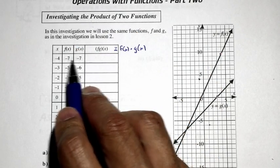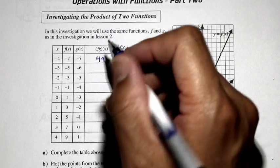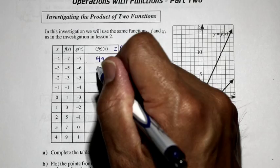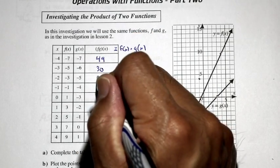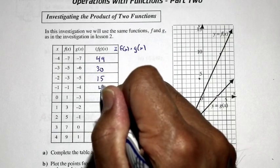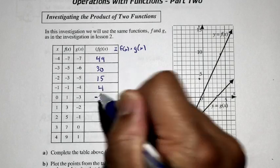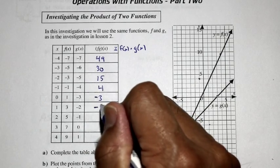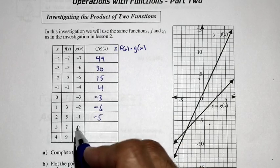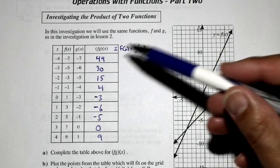Let's take a look. We have negative 7 times negative 7 — that's positive 49. Negative 5 times negative 6 is positive 30. Negative 3 times negative 5 is positive 15. Negative 1 times negative 4 is positive 4. 1 times negative 3 is negative 3. 3 times negative 2 is negative 6. 5 times negative 1 is negative 5. 7 times 0 — anything times 0 is 0. And 9 times 1 is 9.